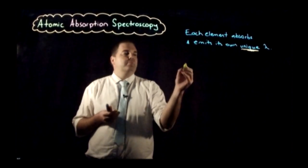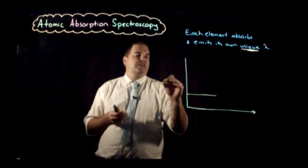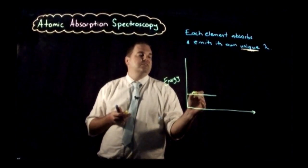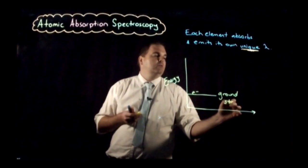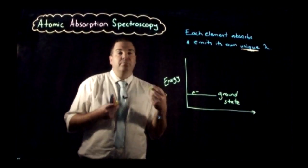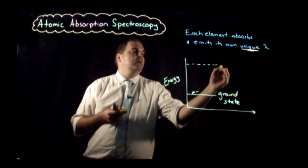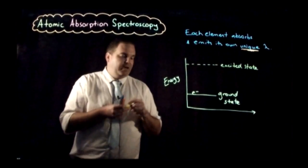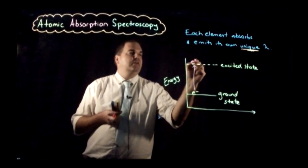If you've got some electrons, we've got some energy along here. These electrons sit in what we call their ground state. When we supply energy into them, these electrons actually jump up to a new state, which is called an excited state. So when we supply energy in, we get the electron jumping up to its excited state.